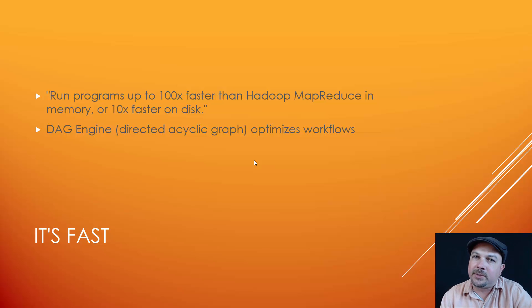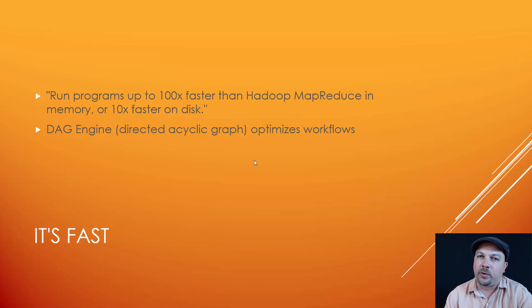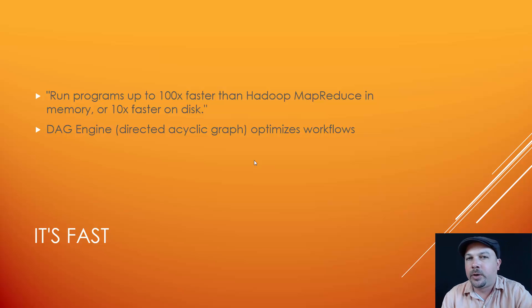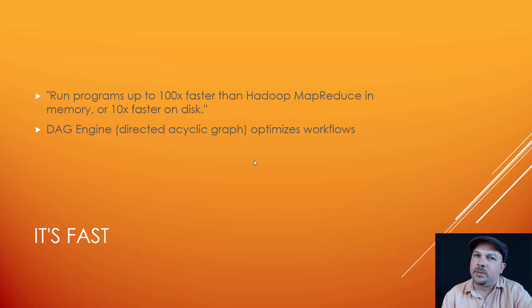Spark is pretty fast — your mileage may vary, and these are sort of best-case scenarios, but Spark is generally preferred over MapReduce for that reason. It is generally a faster thing, and it's more modern, with a little bit more capabilities.